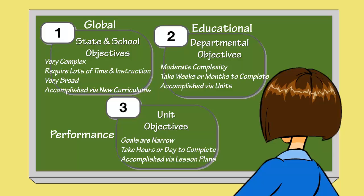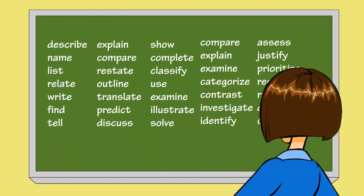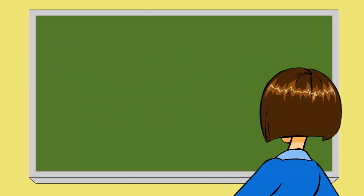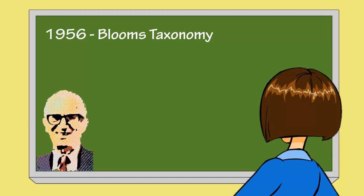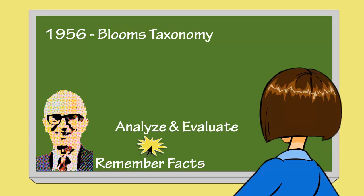Ms. Williams is in the analysis phase of the instructional design process and she is looking to organize her list of goals that she has been analyzing and has written. If Ms. Williams uses an organizing framework such as a taxonomy table, her objectives and ultimately her instruction will likely be more precise and will promote understanding on the part of her students. In 1956, a taxonomy known as Bloom's Taxonomy was created by educational psychologist Dr. Benjamin Bloom and others. Their goal was to promote higher forms of thinking in education, such as getting students to analyze and evaluate rather than just remember facts.